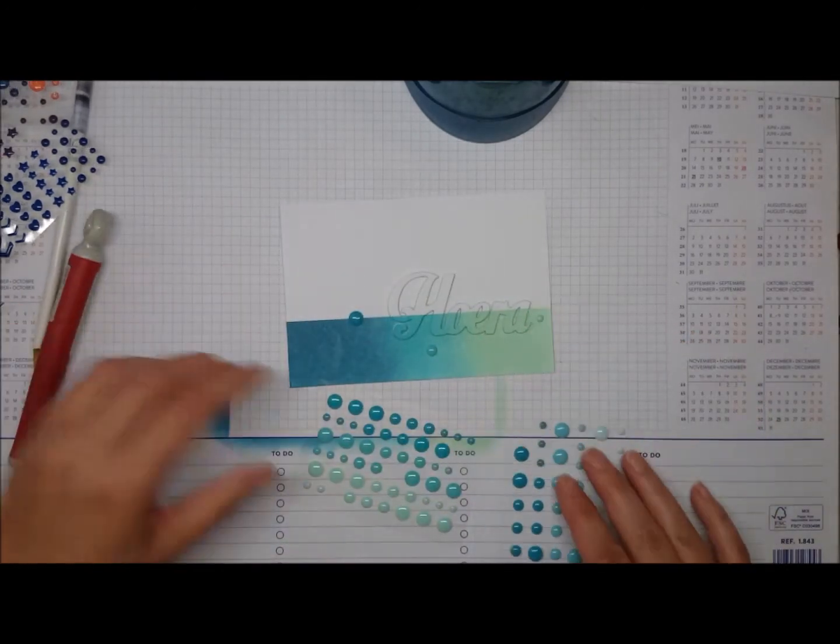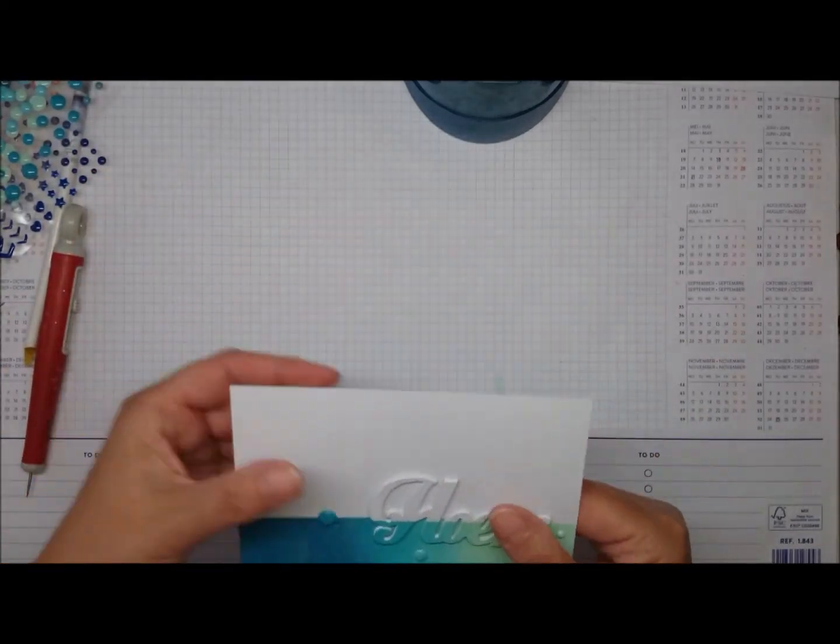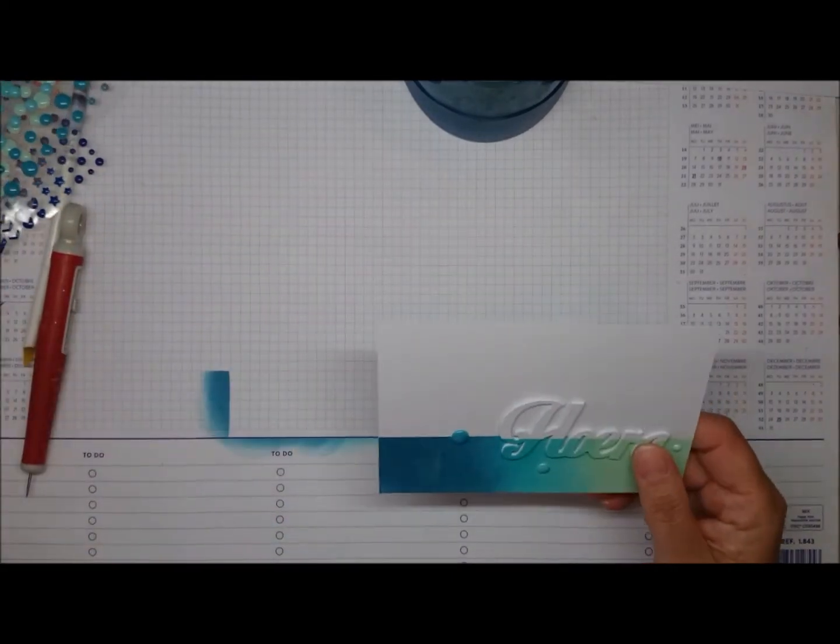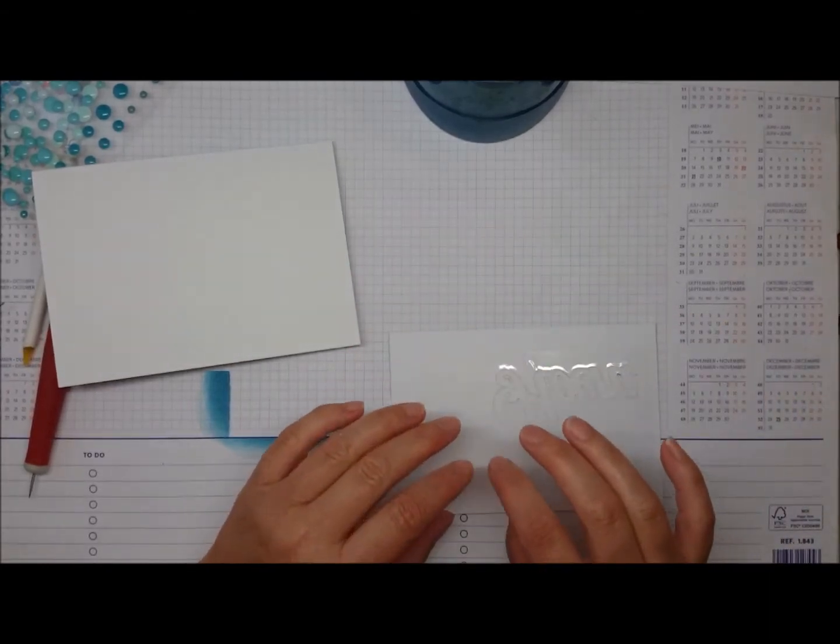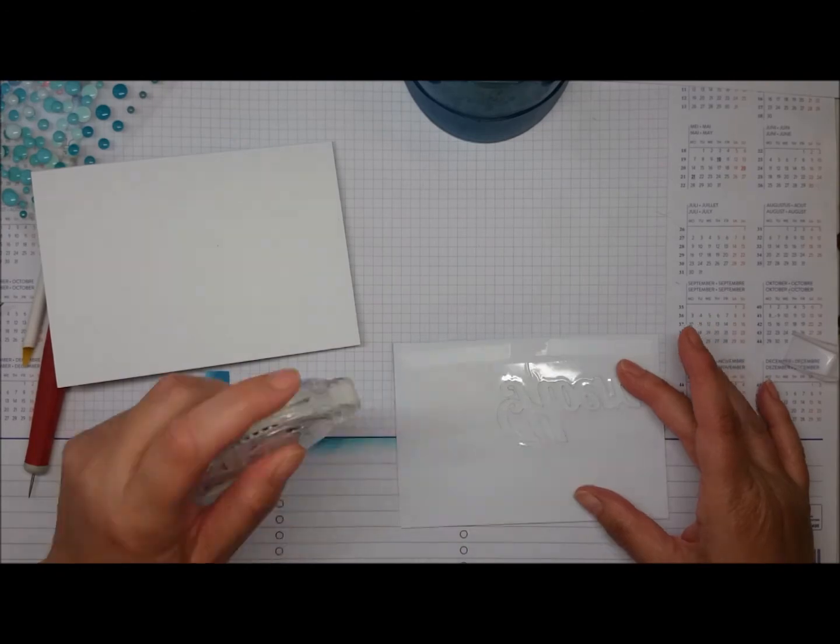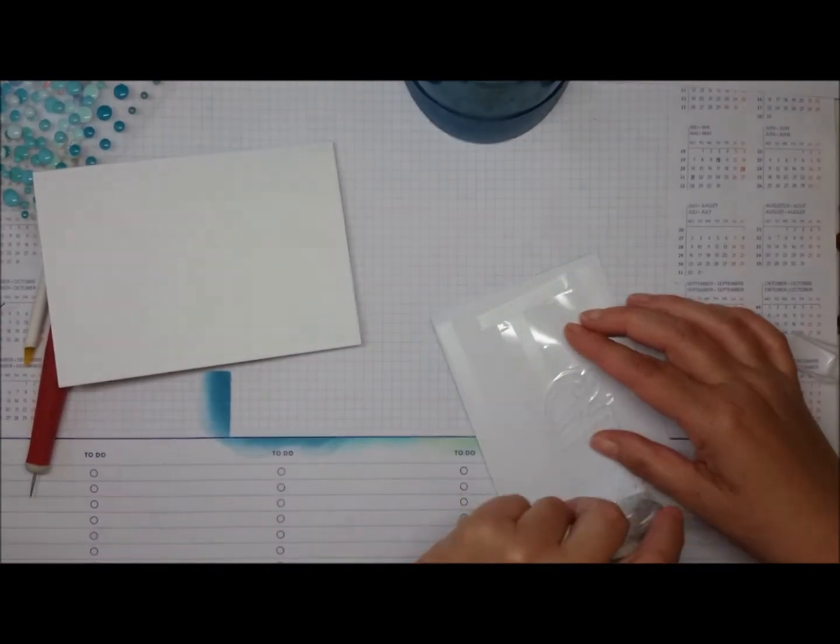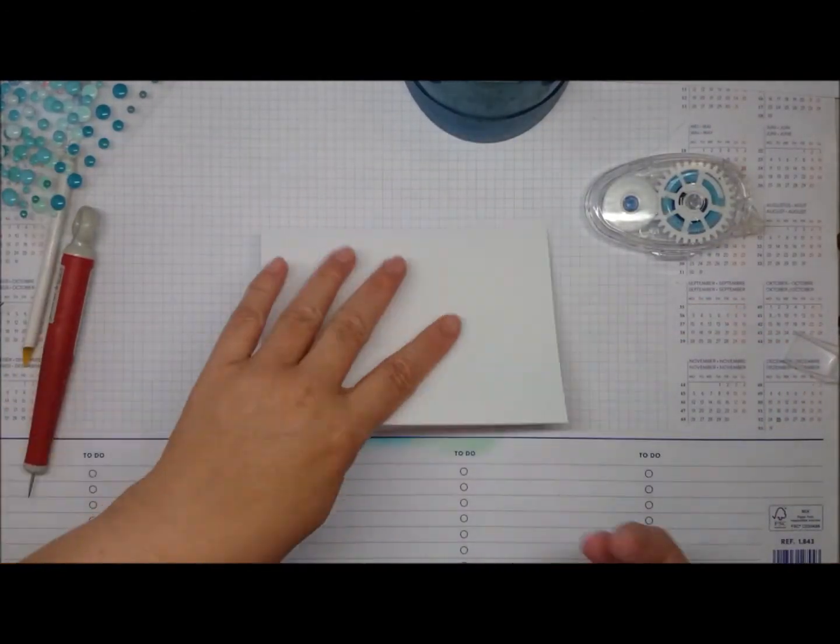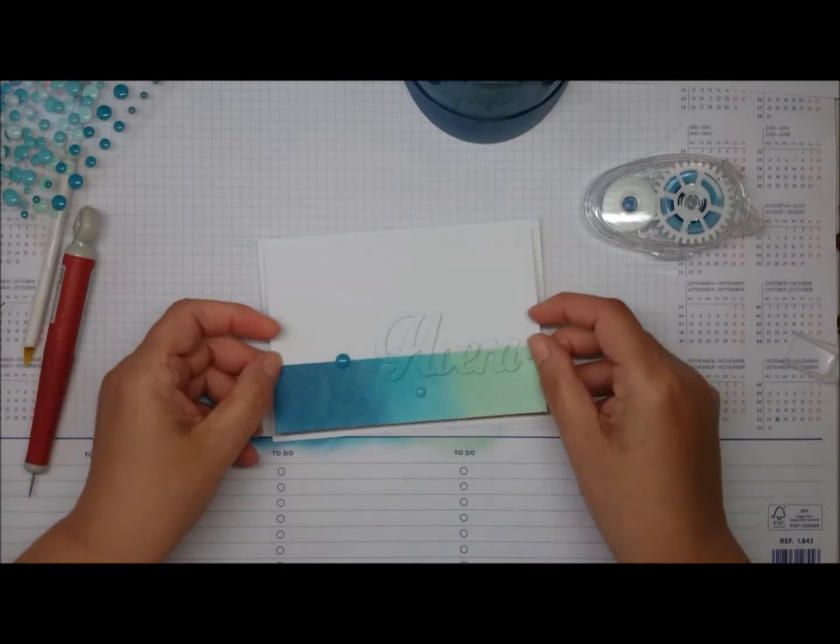You can put them on top if you want to, but I like to keep the top really empty and minimalist and modern simple. You can mount it with foam tape. I thought it has enough dimension as is, so I'm just using tape runner to mount it on the card. Make sure it's the right way up and that's the card finished.